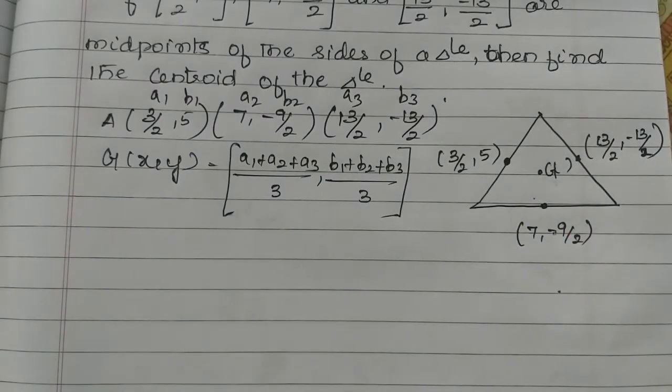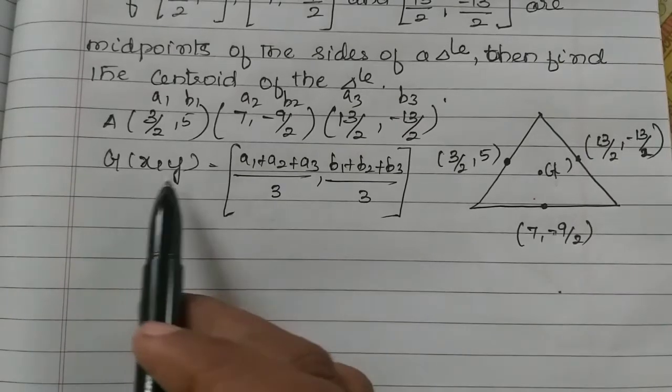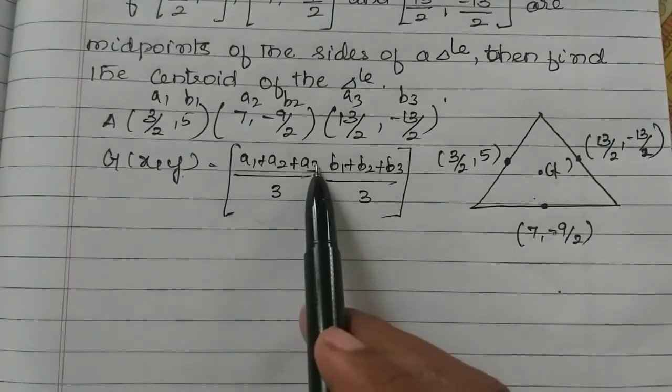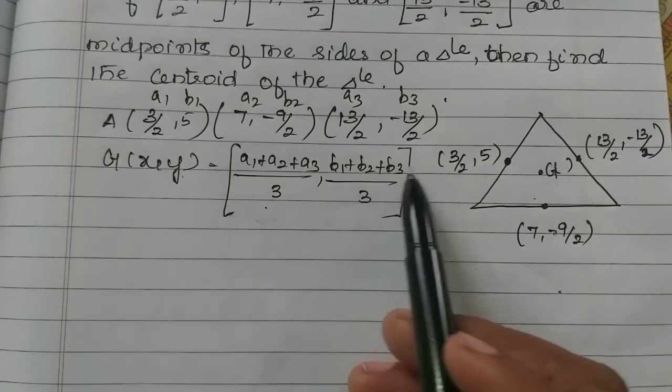Now, we will not change the formula. We will change the introduction part. So, G when midpoints are given: